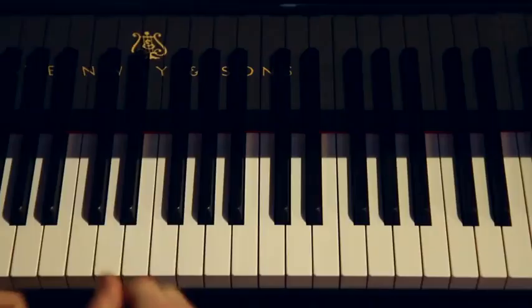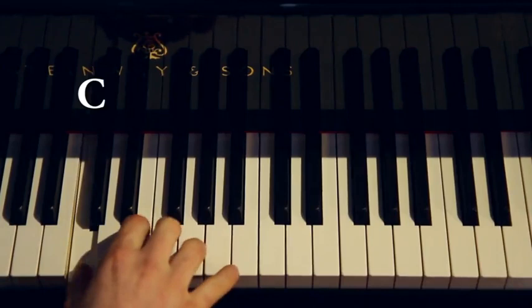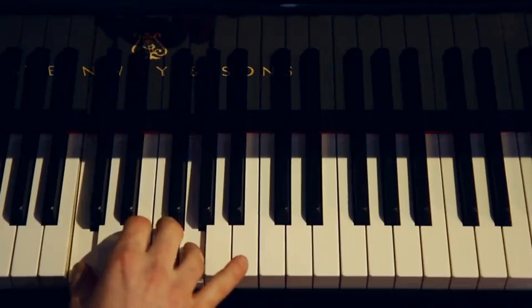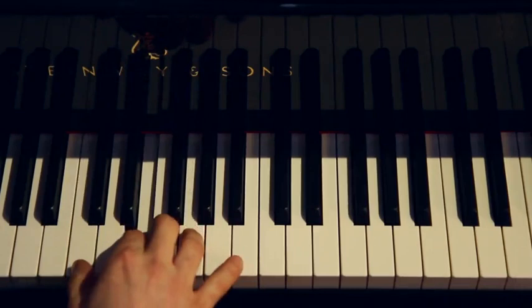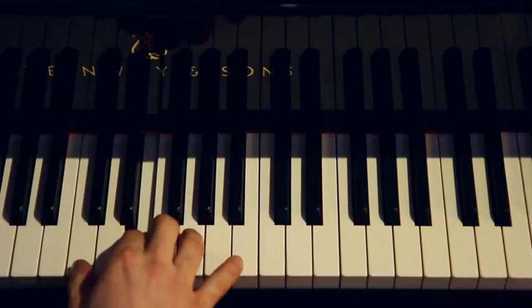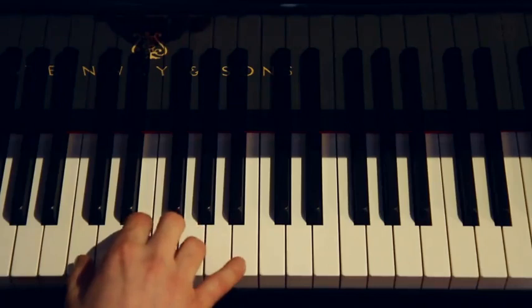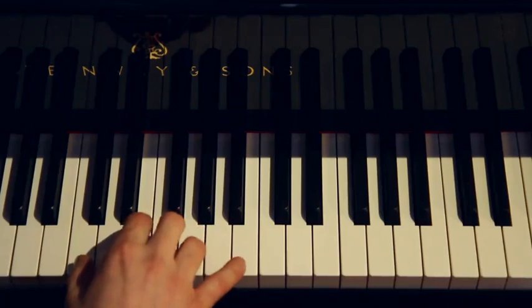So if we take notes one, three, five starting on C in the key of C major, we've got C, E, G. We know there are seven semitones between C and G — that's a perfect fifth — and four semitones between C and E — that's a major third. Now because this has three notes it's a triad, the simplest type of chord. A triad that has a perfect fifth and a major third is a major triad.